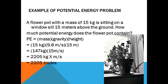Here's an example problem. We have a flower pot with a mass of 15 kilograms sitting on a window 15 meters above the ground. We replace with the values: 15 kilograms times gravity 9.8 times height 15 meters, and we arrive at 2,205 Joules. Remember: potential energy equals mass times gravity times height.